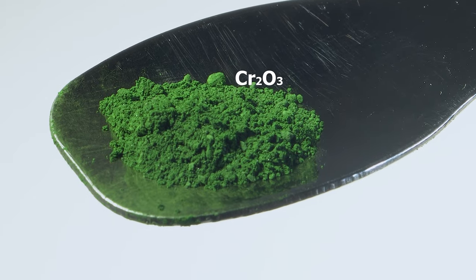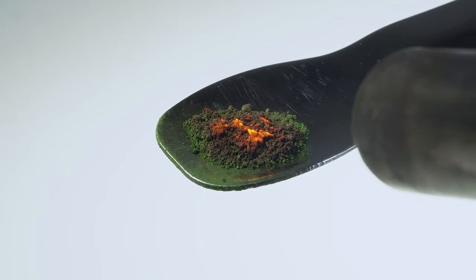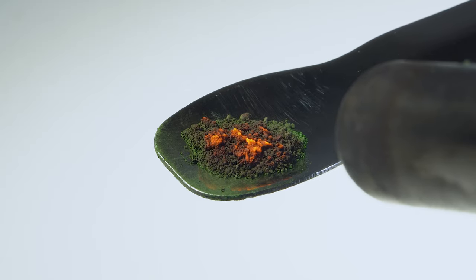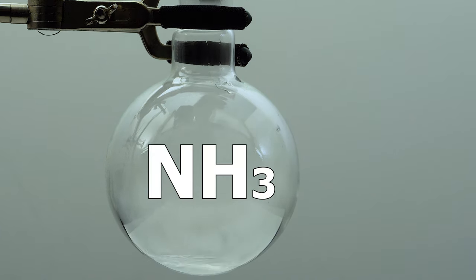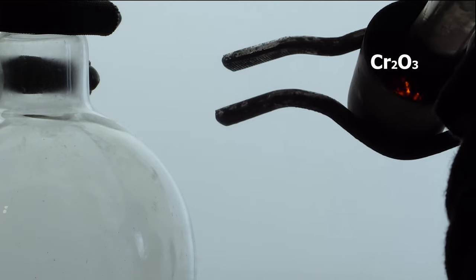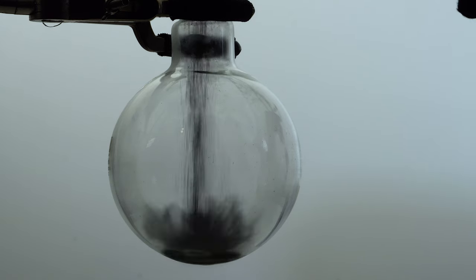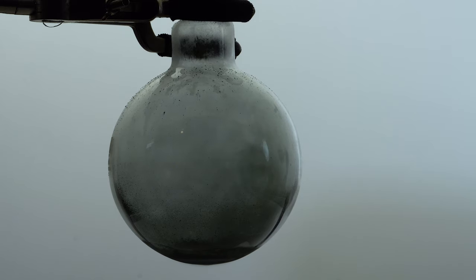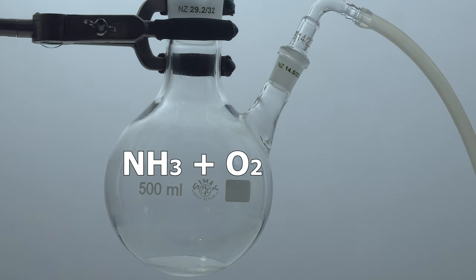Red hot dichromium trioxide is a catalyst for the oxidation of ammonia by oxygen. Nothing happened here because ammonia forced all the air out of the flask, and we need oxygen for the reaction to take place. Let's reconduct the experiment in the presence of oxygen.